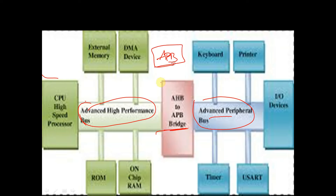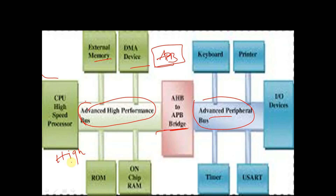In AHB bus, the AHB bus is used to connect with devices like external memory, DMA device, high speed processor, ROM, or on-chip RAM. These are basically high performance devices — devices which require more memory or higher performance are connected with the AHB interface.